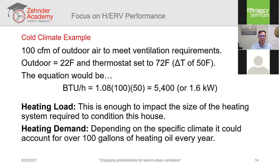Depending on how much of the year is at these cold temperatures, this ventilation energy penalty could account for over 100 gallons of heating oil — a significant cost. For a hot climate example with 100 CFM, at 92°F outdoor and 72°F indoor, the ΔT is only 20 degrees. Running the equation gives just over 2,000 BTUs per hour, or 633 watts. Summertime is definitely easier than winter in a cold climate, but it could still account for hundreds of dollars in extra electricity.